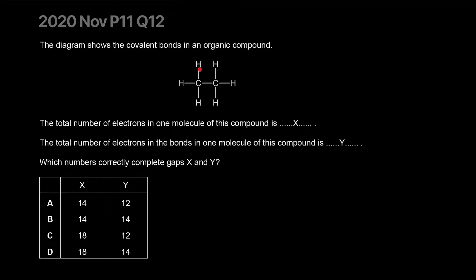The diagram shows the covalent bonds in an organic compound. The total number of electrons in one molecule of this compound is X. The total number of electrons in the bonds in one molecule of this compound is Y. So the second one is here. Let's start with the first one.